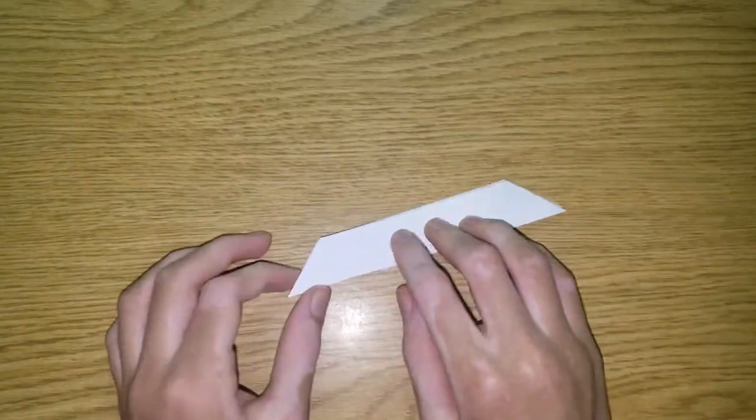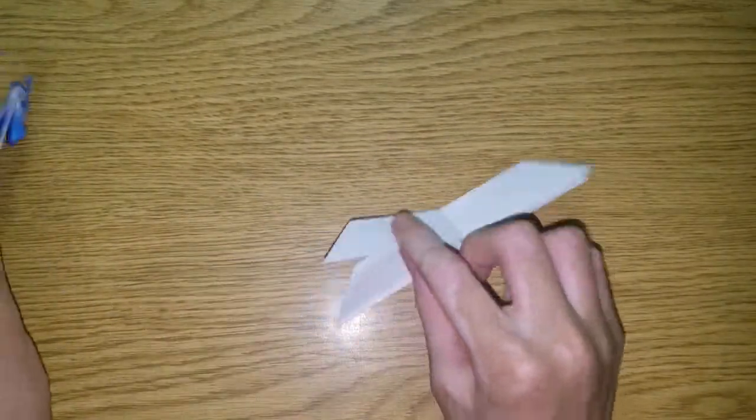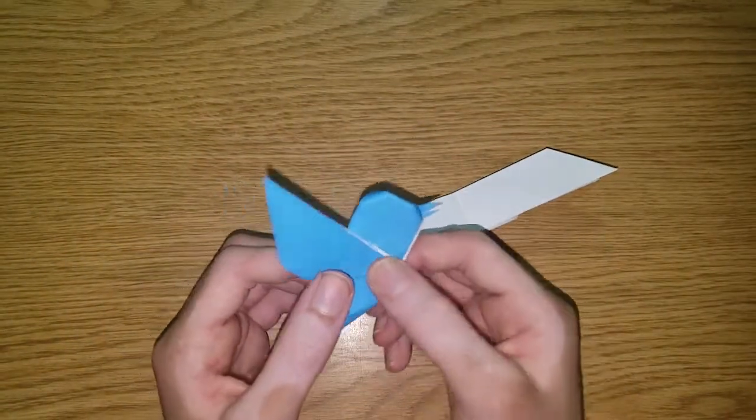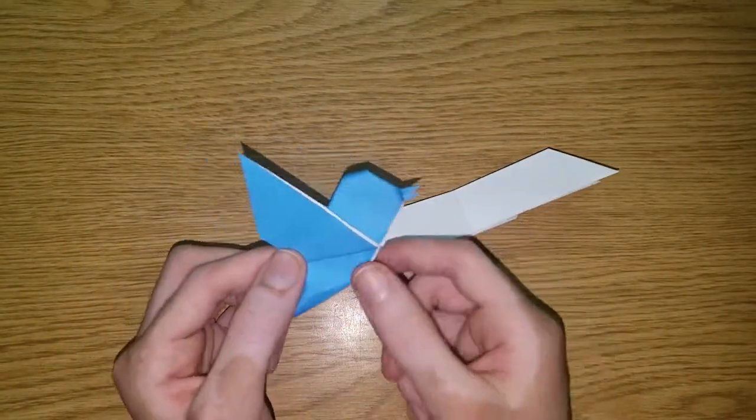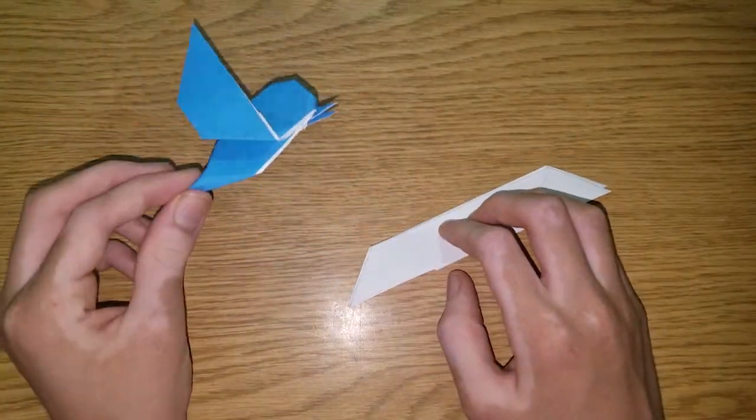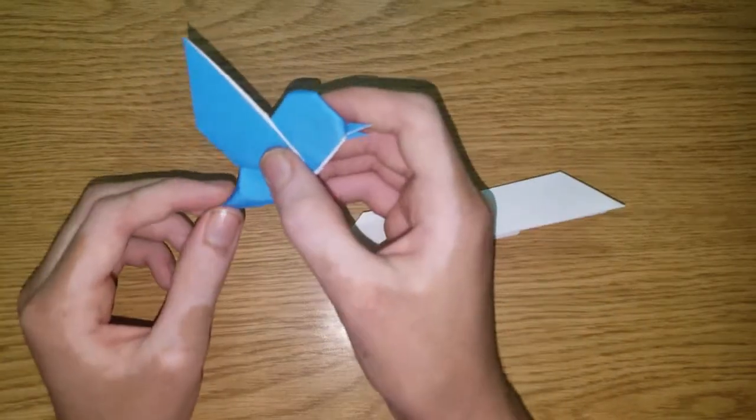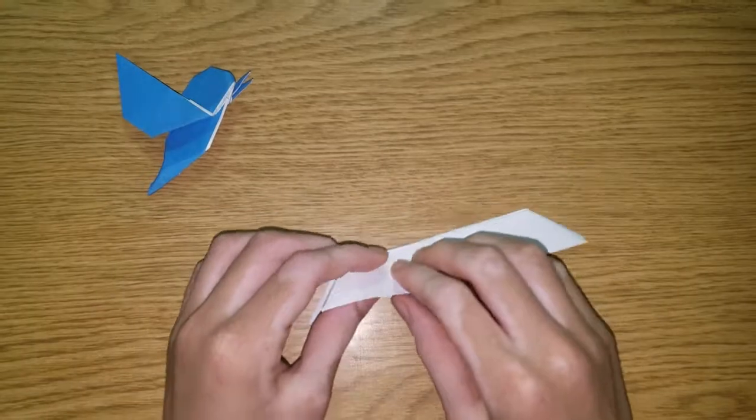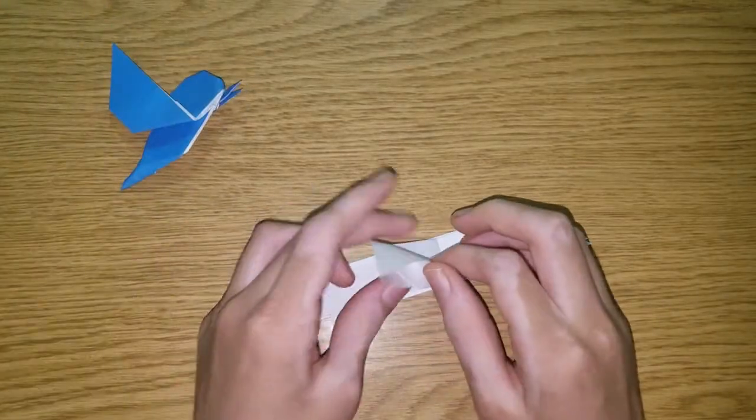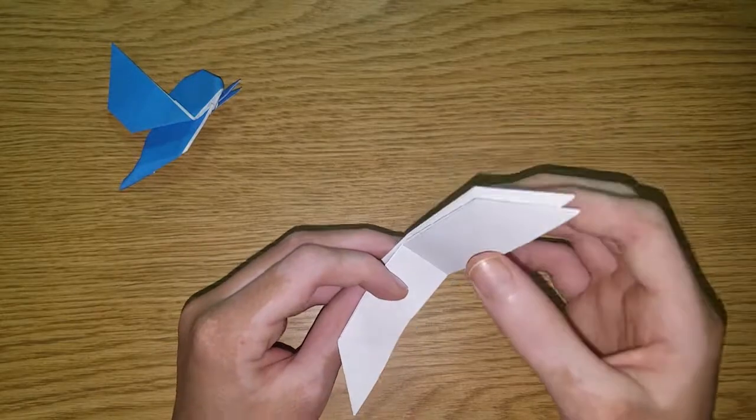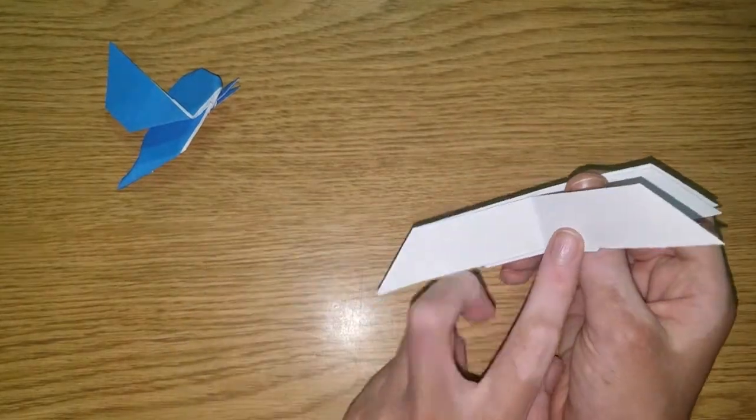Now you're going to do the details, which are not exact folds. Most of them don't have any reference points. So I'm going to keep looking at this in between because I don't exactly remember. So this is going to be the wing. And these two flaps are going to become the head, and this is going to be the tail.